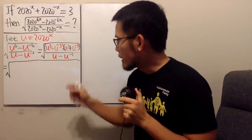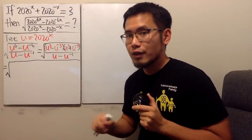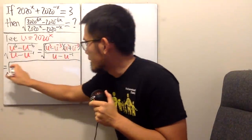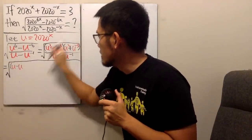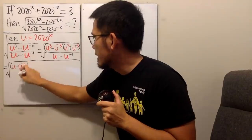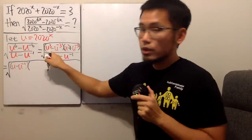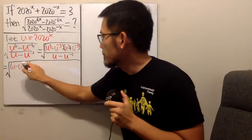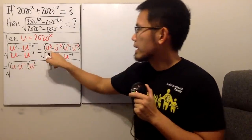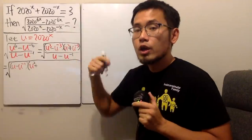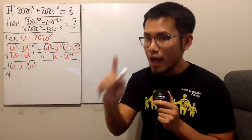Anyway, this right here, factor as the difference of two cubes. The first factor is going to be u to the first power minus u to the negative one power. And then we do the following. This is going to be u squared and then plus this times that, u to the third power times u to the negative third power is just equal to one.